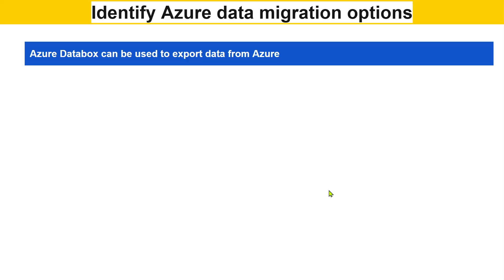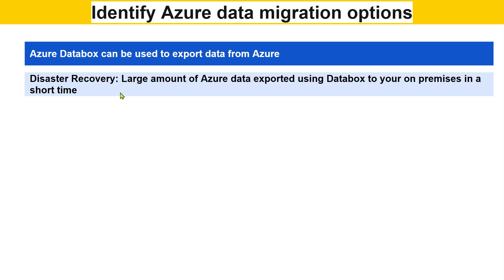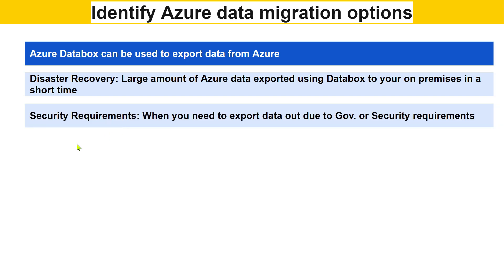It's not only about transferring data from your data center to Azure. The other way around is also possible. This is called export — you are taking data out from Azure. For example, if a disaster occurs and your on-premises data center gets damaged, but your data is already in Azure, you can use the Azure Data Box export service to get that large amount of data back quickly. All the data from Azure cloud is transferred to the Data Box and sent to your on-premise location.